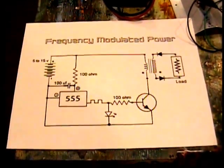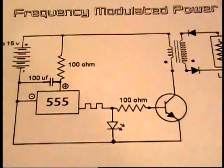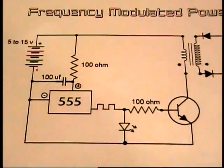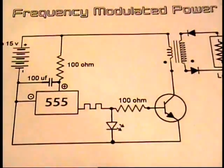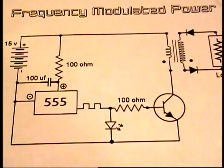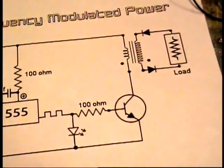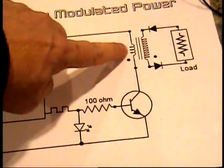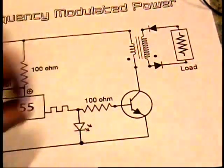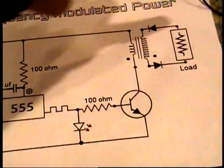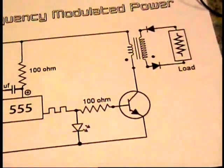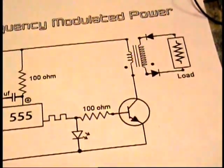So again here's my schematic for what we're dealing with. We're dealing with a 555 timer running a transistor which is going to vary the frequency on a standard transformer, and we're going to power a 6 watt load which will be an LED light bulb.